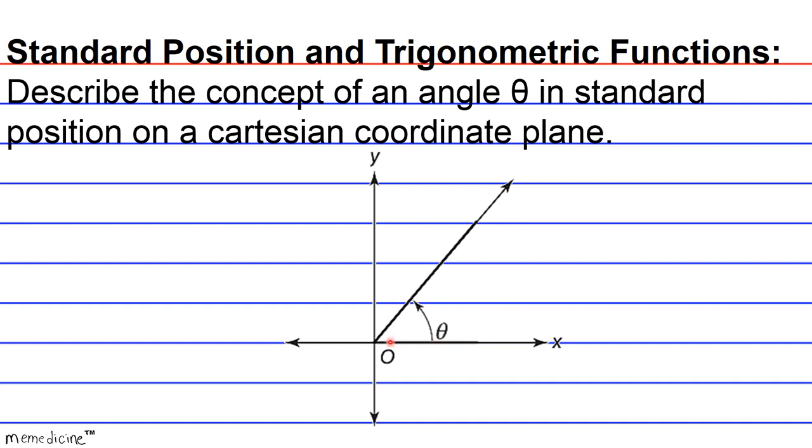Third, the other ray terminates in quadrant one, and it's called the terminal side ray. We'll call it R for short, R for ray.